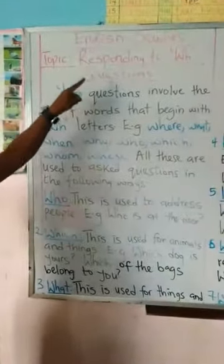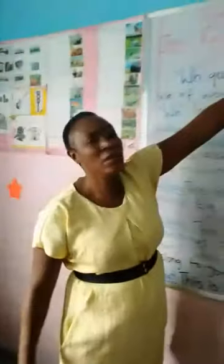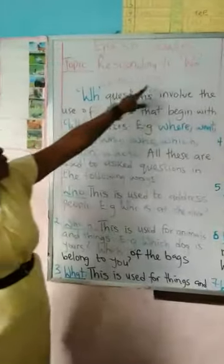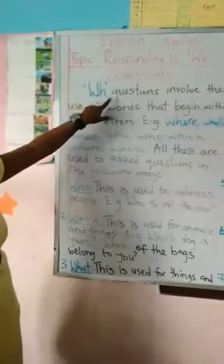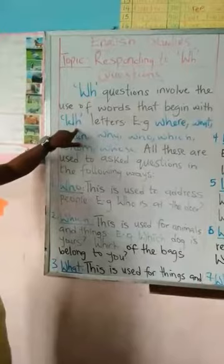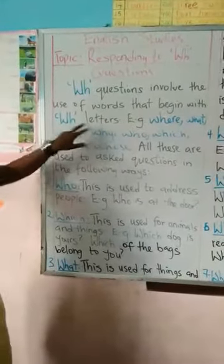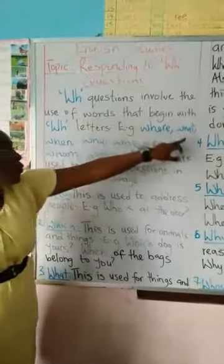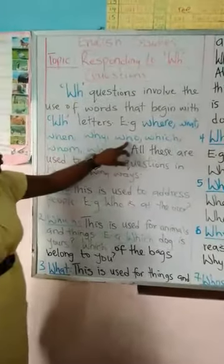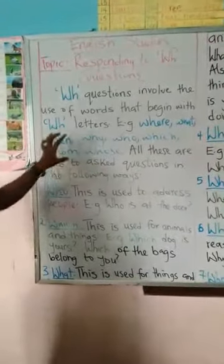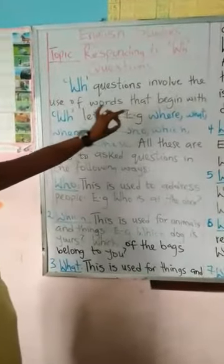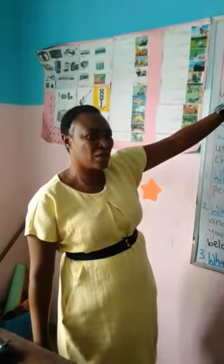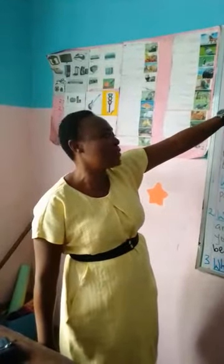For today we'll be looking at responding to WH questions — that is, giving answers to questions that begin with WH. WH questions involve the use of words that begin with the letters W-H, such as where, what, when, why, who, which, and whose. These are all WH questions. They begin a sentence, which is why the first letter is written in capital letters.